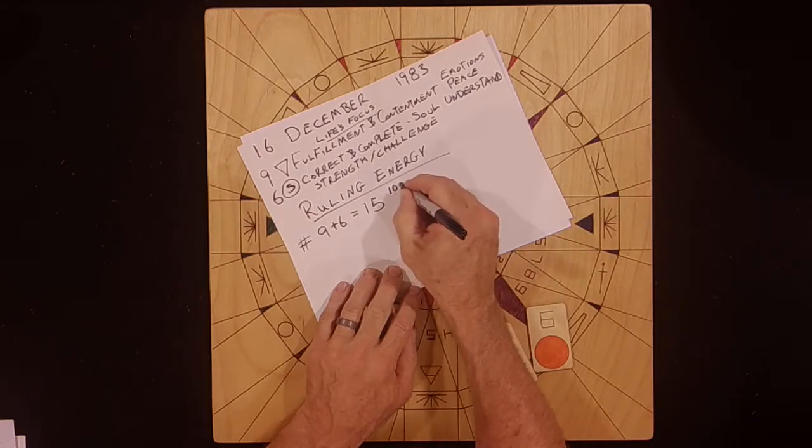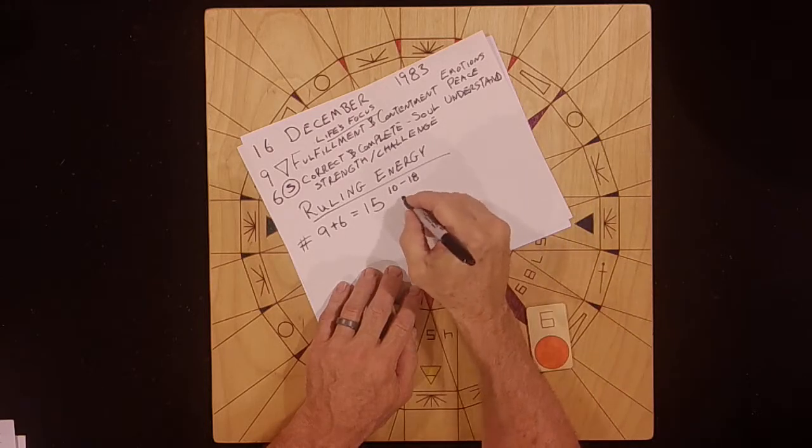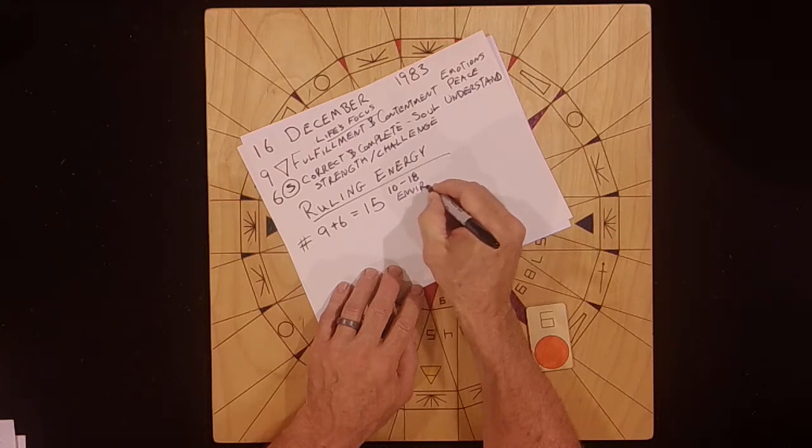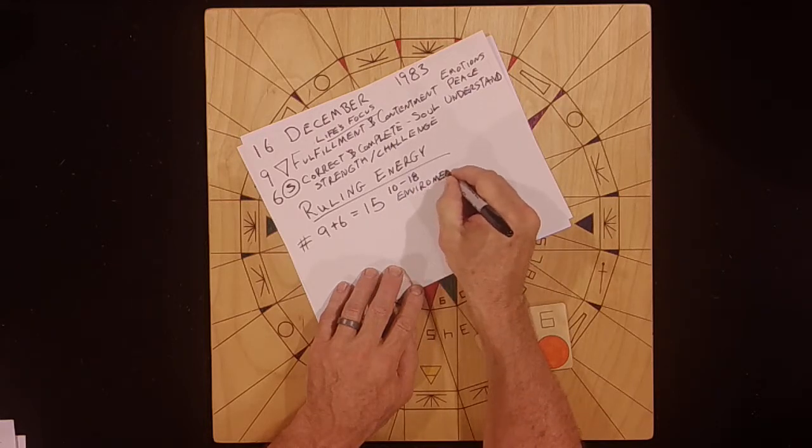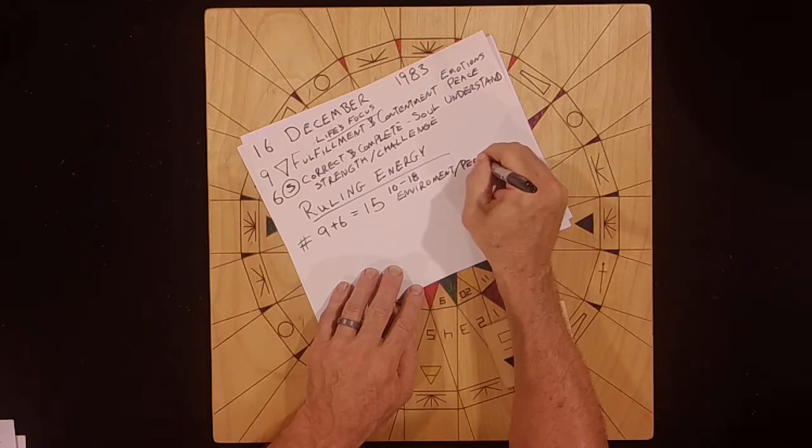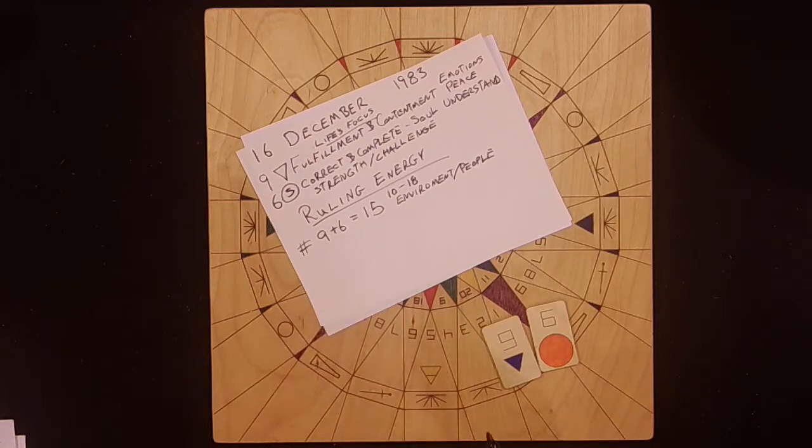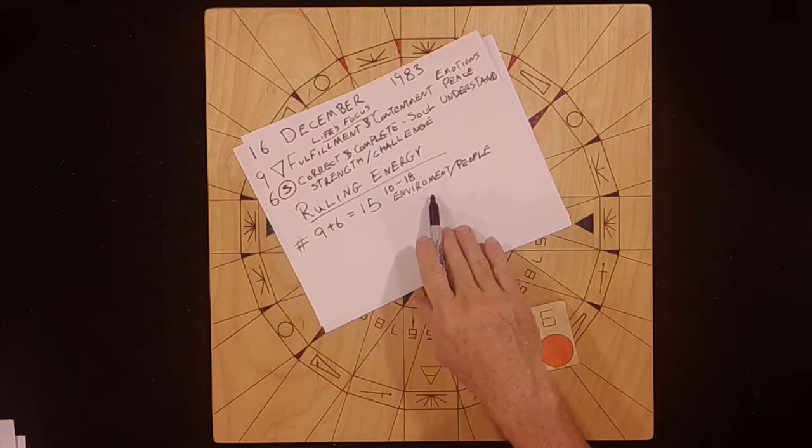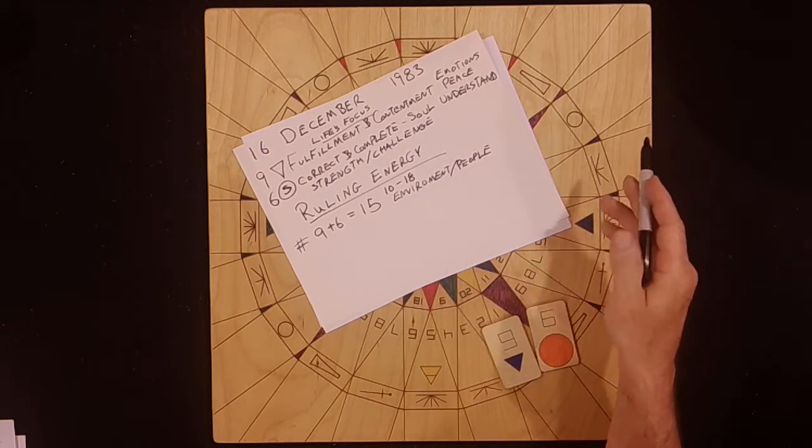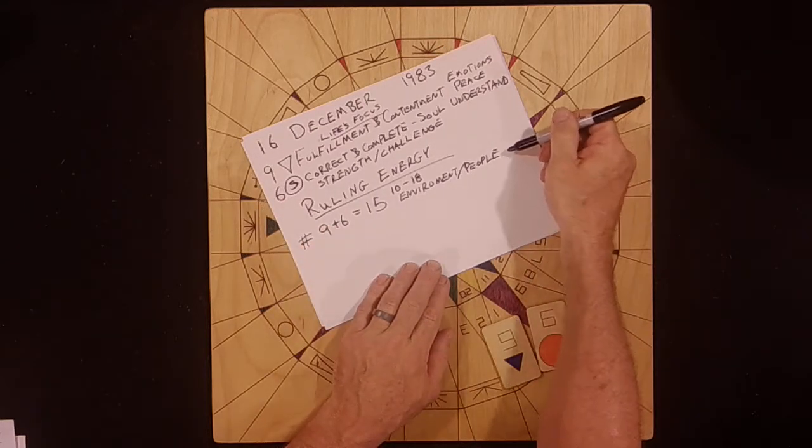It's between 10 and 18. And that set has to do with their environment, the world around them, and the people around them. And the 15 is a 6. This is about being correct in their environment and in the world around them.